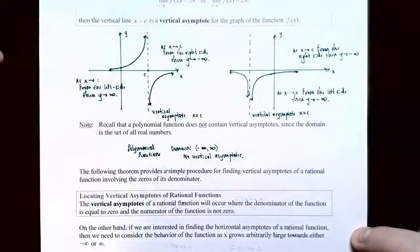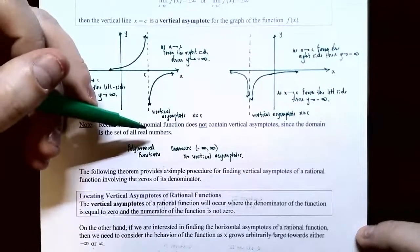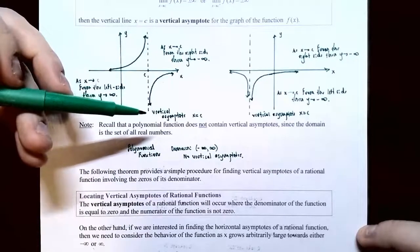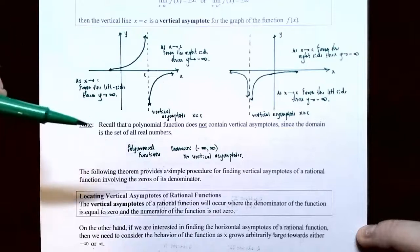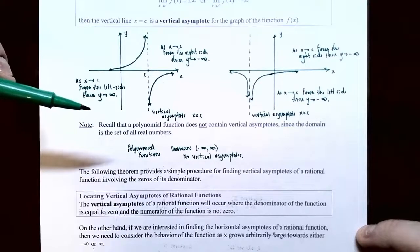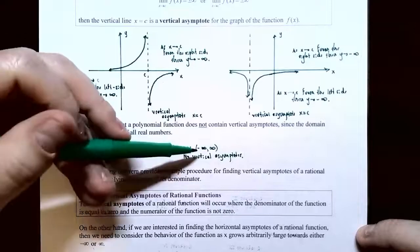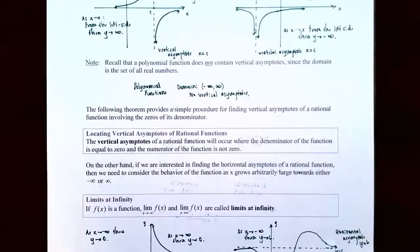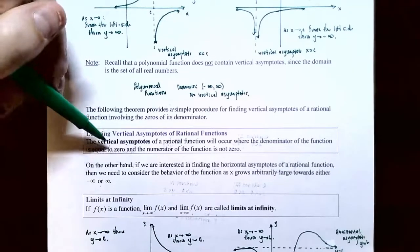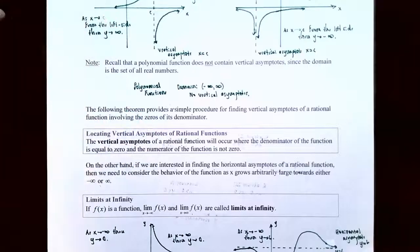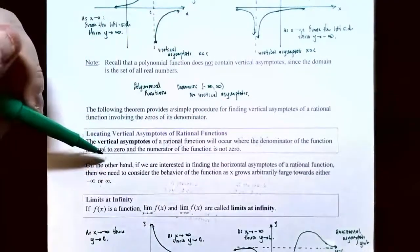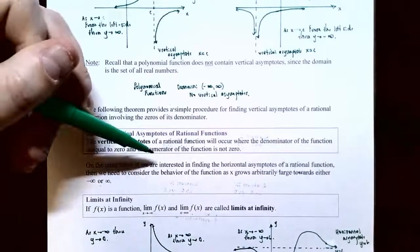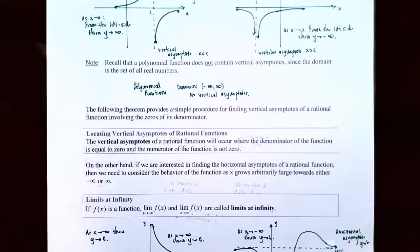Recall that a polynomial function has hills and valleys with no vertical asymptotes, since the domain of a polynomial function is all real numbers — negative infinity to infinity. For rational functions, a vertical asymptote occurs when the denominator of the function is zero but the numerator is not zero. So a vertical asymptote occurs at whatever makes the denominator zero but not the numerator.